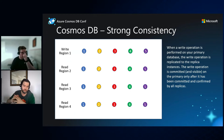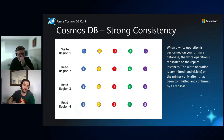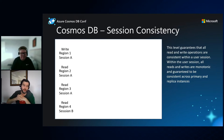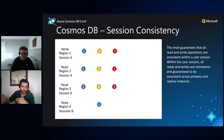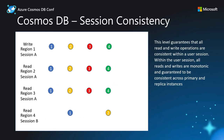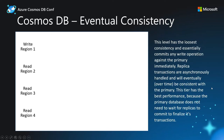The middle consistency level is called Session consistency. Within a single user session, you get the same strong guarantees even if you're writing to one region and reading from others. However, a separate user in a different session will not read at exactly the same moment, though there is a guarantee that write operations will occur in the same order.